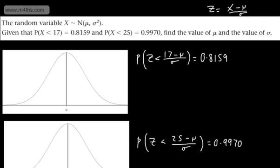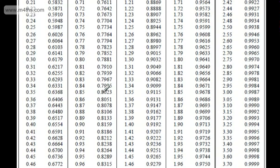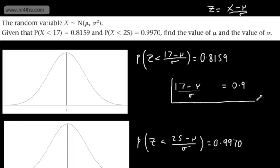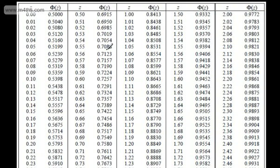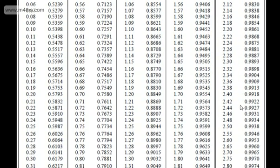Let's find 0.8159 in our table. Looking up 0.8159, that gives me z = 0.9. So I can write that 0.9 equals 17 minus mu divided by sigma — I'll call this equation 1. For the second case, I'm going to go to the table and find 0.9970, which is going to be somewhere around here.